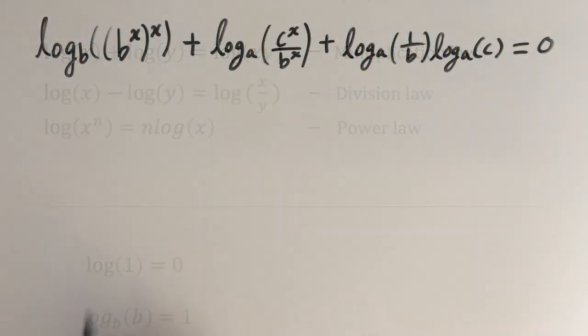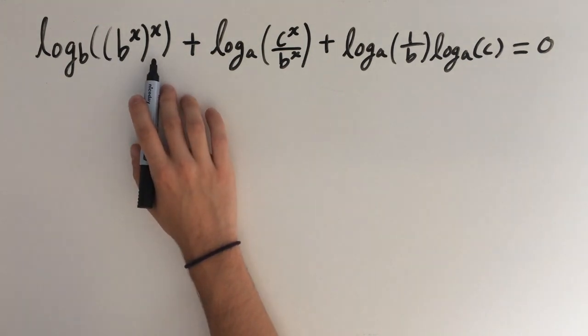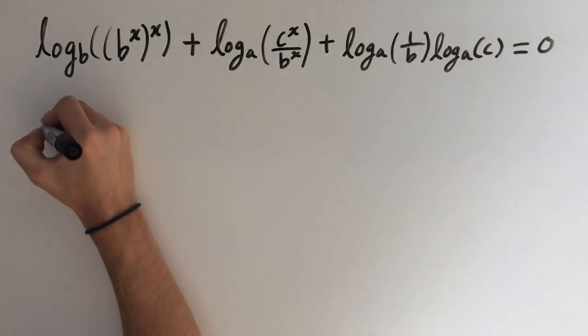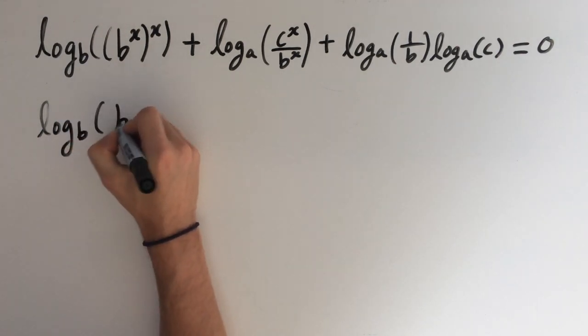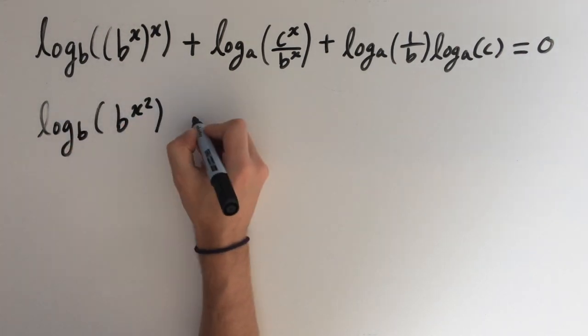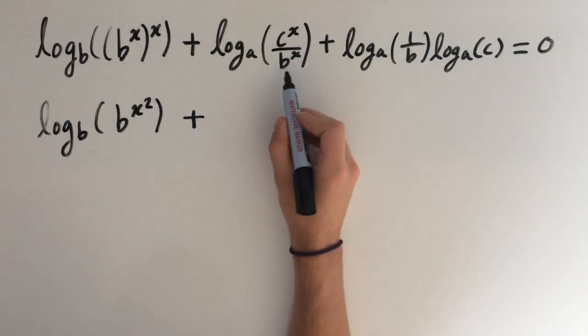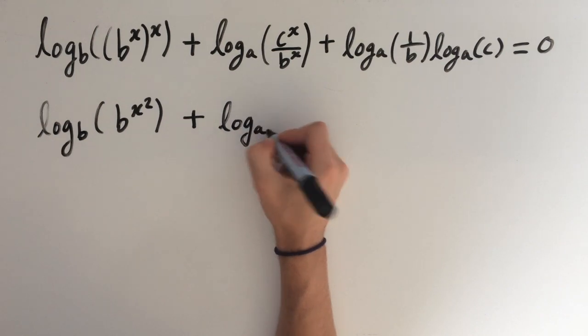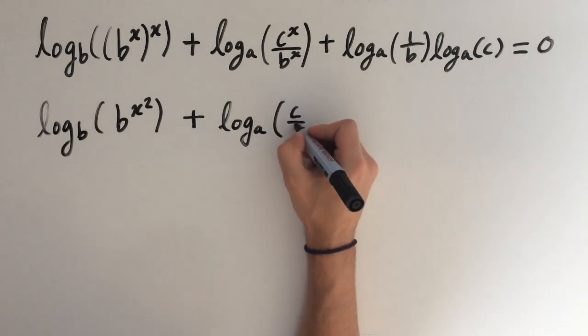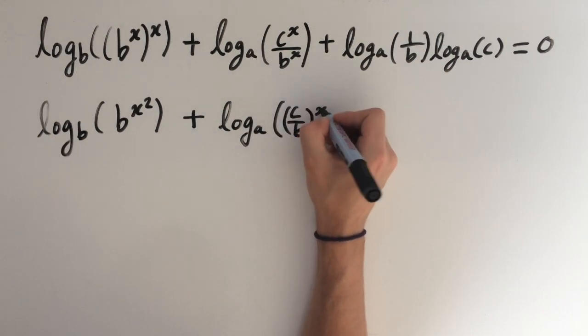Okay, so now let's get into the question. b to the x to the power of x is the same as having b to the x squared. So we'll have log base b of b to the x squared. And c to the x over b to the x, we can factorize the power of x out. So we'll get log base a of c over b to the power of x.